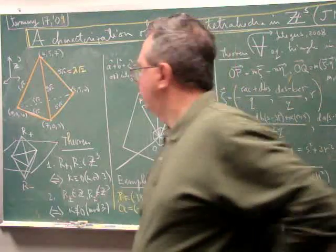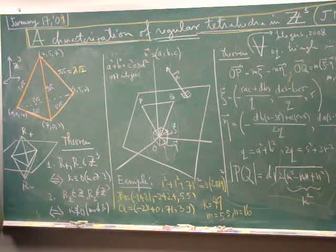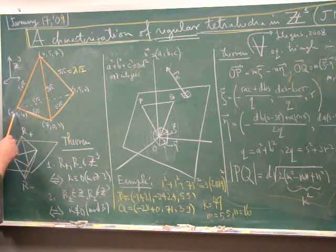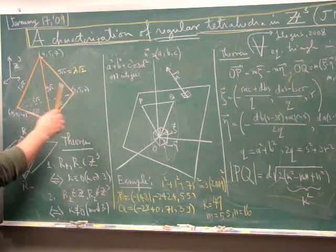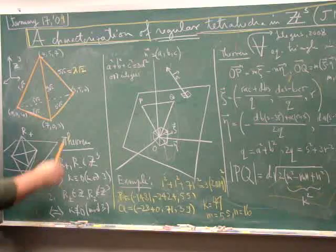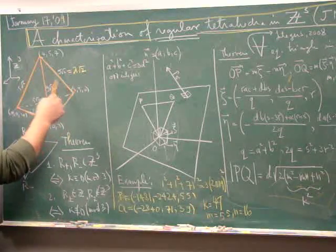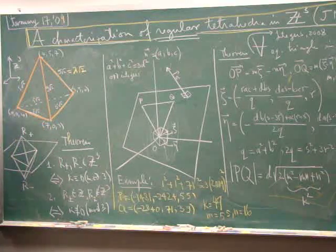Here's an example of a regular tetrahedra that has integer coordinates. One can take (0,0,4), (7,0,3), (3,5,0), (4,5,7) and compute the Euclidean distances between every two vertices and get 5√2.